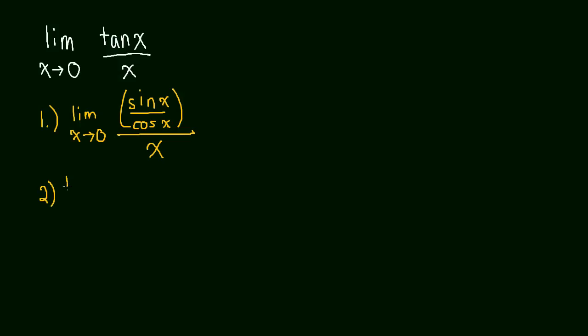So step two, we'll be taking the limit again. Of course, we always got to write the limit in, of sine x over cos x times x. That's what happens when we simplify that.